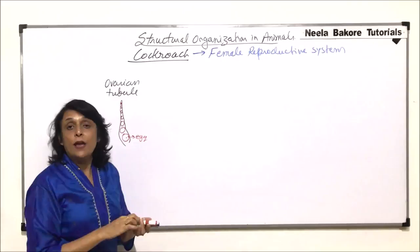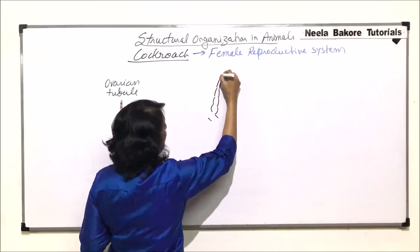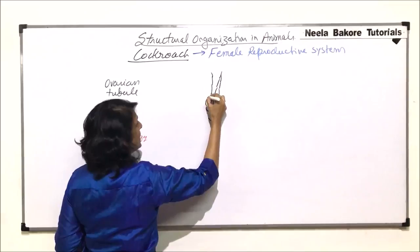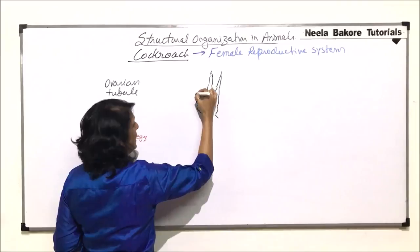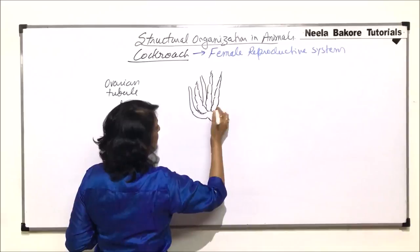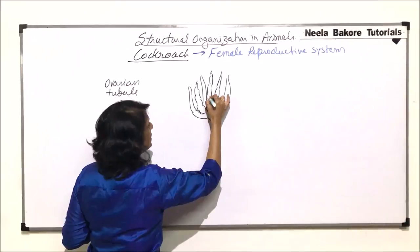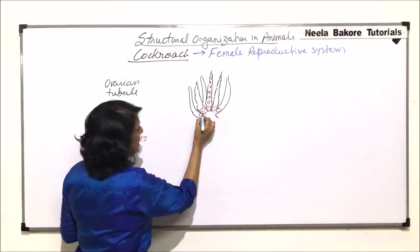The fully formed egg would be seen near the swollen part. If we draw the ovary, we would draw one ovarian tubule, and then one more. There are eight such ovarian tubules present in one ovary. All these ovarian tubules would have the eggs near the terminal end, and here the eggs would be seen in the developing stages.